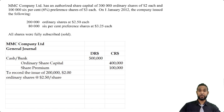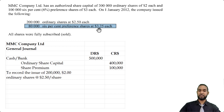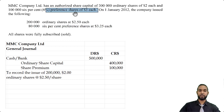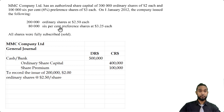Now let's look at the journal entry to record the issue of preference shares. We issued 80,000 6% preference shares at $3.25 each. The issue price of $3.25 is above the par value of the preference shares, which is $3.00, so we'll also have a premium element. As for the 6% — that's the dividend rate on the preference shares and it only comes into play when you're paying dividends. It does not factor in at all when you are issuing the shares and recording the money received. So right now the 6% is totally irrelevant to our calculation.